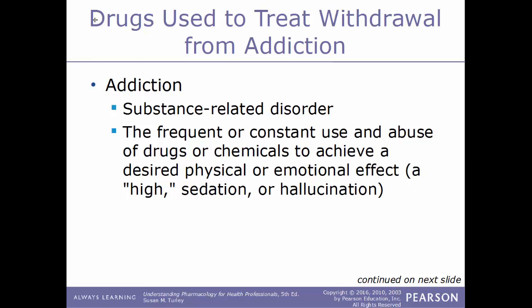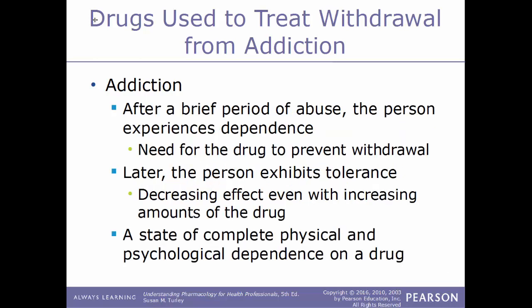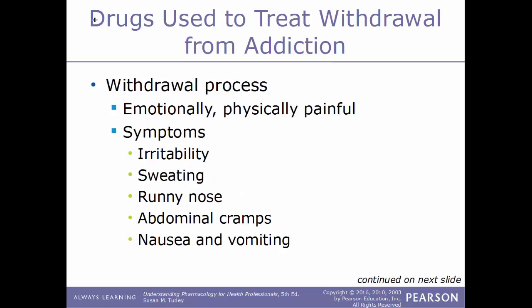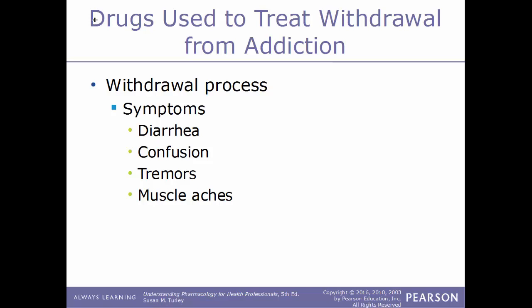Addiction is the frequent or constant use and abuse of a drug or chemical to achieve a desired physical or emotional effect such as a high, sedation, or hallucinations. After brief abuse, the person experiences dependence — the need for the drug to prevent withdrawal. Later, tolerance develops: a decreasing effect even when the amount taken is increased, creating complete physical and psychological dependence. Commonly abused drugs include heroin, cocaine, narcotics, barbiturates, anti-anxiety drugs, and alcohol. Withdrawal symptoms include irritability, sweating, runny nose, abdominal cramps, nausea, vomiting, diarrhea, confusion, tremors, and muscle aches.